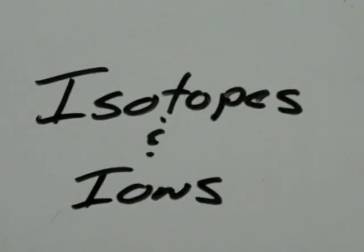Today's lesson is going to be over isotopes and ions. We're going to start by picking up with yesterday's lesson a little bit, just to review, and then talk about what these isotopes and ions are.